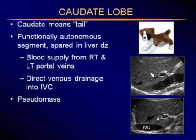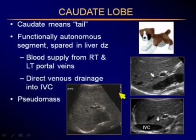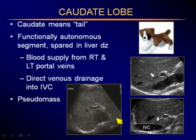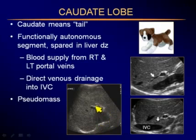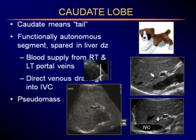The caudate lobe can sometimes look like a mass — we call this a pseudomass. If you ever think you see a mass in the caudate, ask yourself first whether it's a pseudomass. What happens is the ultrasound beam comes through the portal structures and becomes attenuated, partially dropping out and giving the appearance of a hypoechoic mass. If you move off this porta and come in with the beam from different angles, you will see that it is not truly a mass.